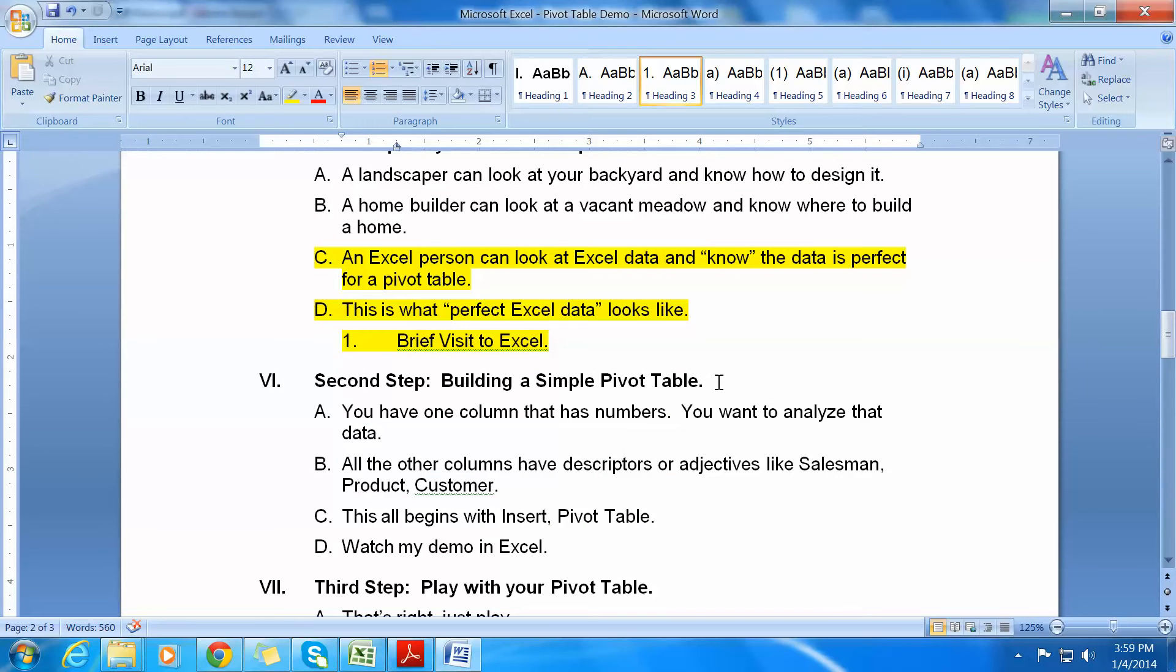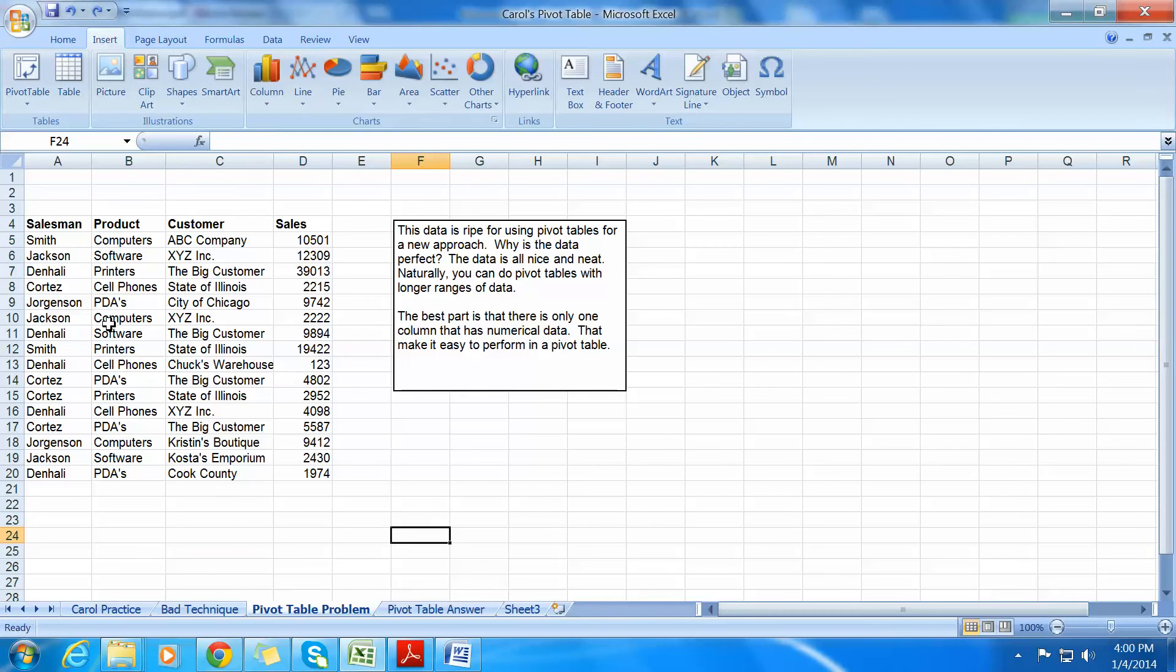Now the second step is, well, okay, Rich, how do I build this stuff? As I said, you have one column that has numbers, and you want to analyze that data. And all the other columns have descriptors or adjectives like salesman, product, customer. Well, this all begins with insert pivot table. That's the command. Now watch my demo. Don't forget, insert pivot table. So we go over to here, and we're on this, clicking on it, and we do insert, and over here we have pivot table.